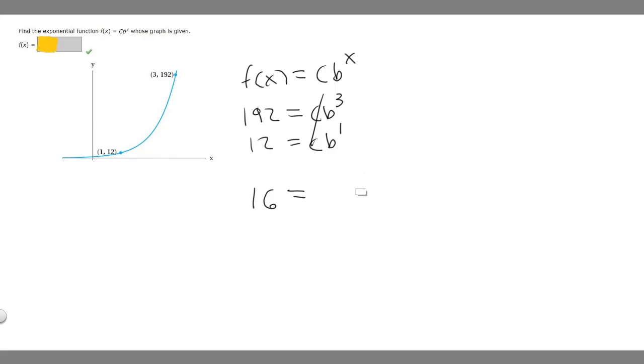We know that 16 = b^2. To find what b is, we can square root both sides, which gives us 4 = b. Now that we know what b is, we can solve for c and plug in those values for our equation.